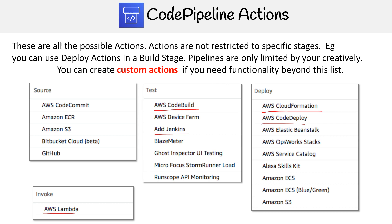You have to think about the context of what code pipeline is — if it's for CI/CD, it makes sense to use Lambdas there. And that covers all the actions.